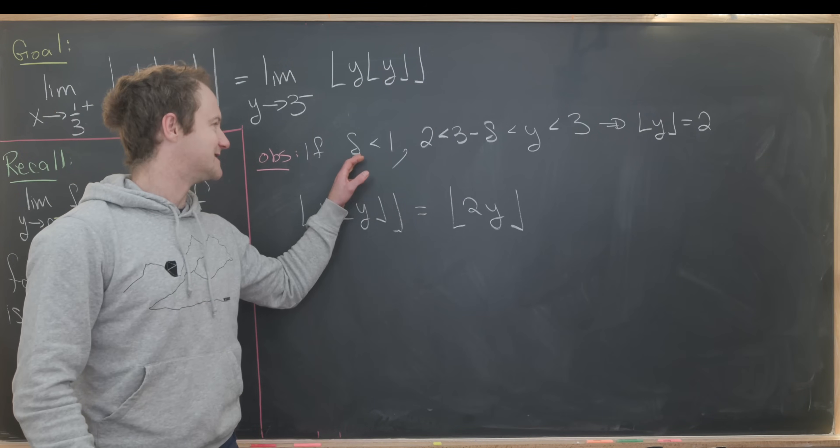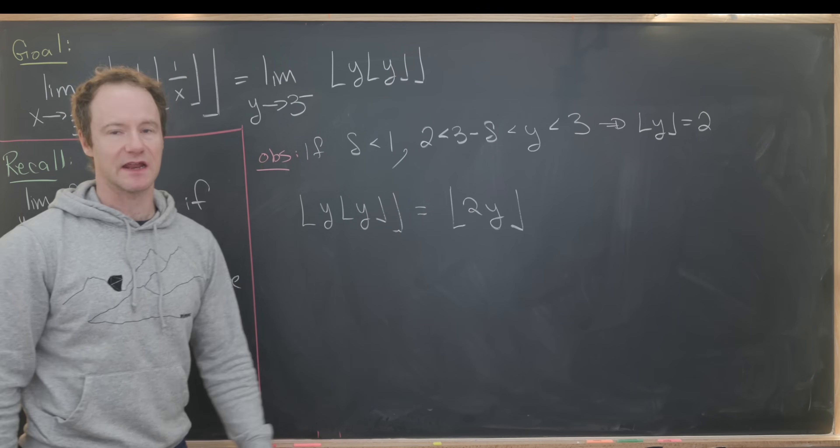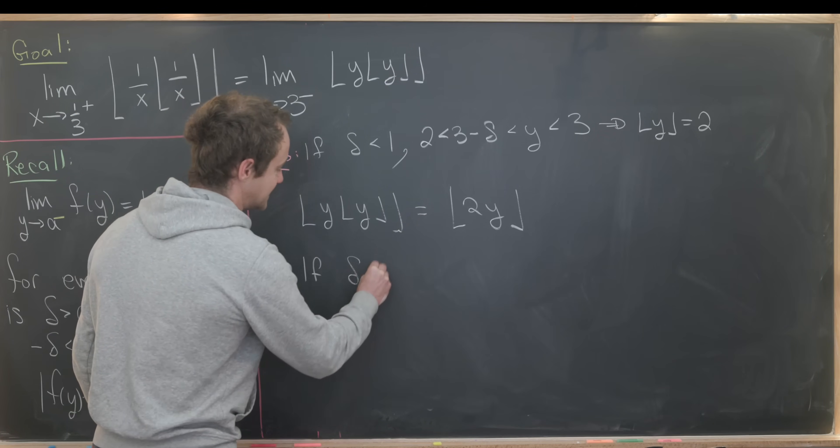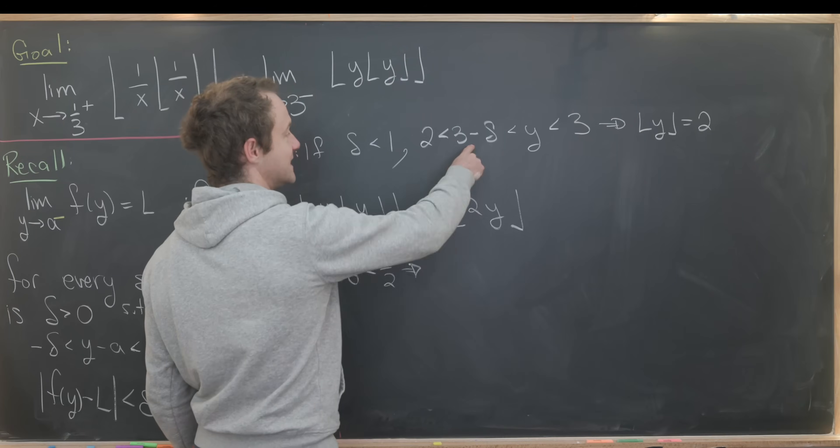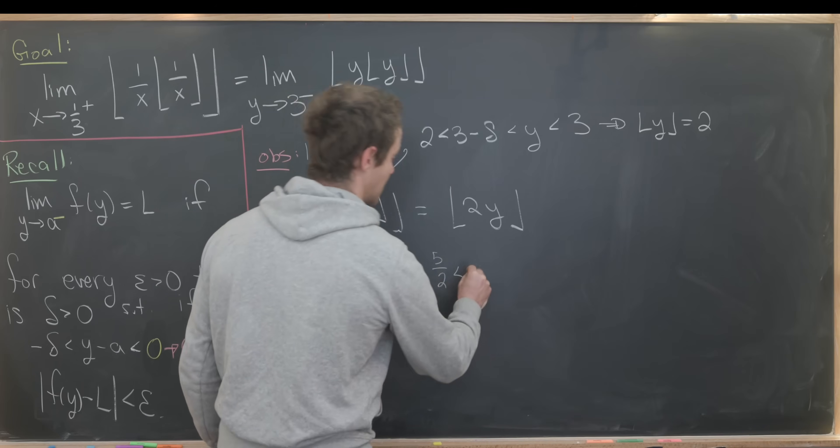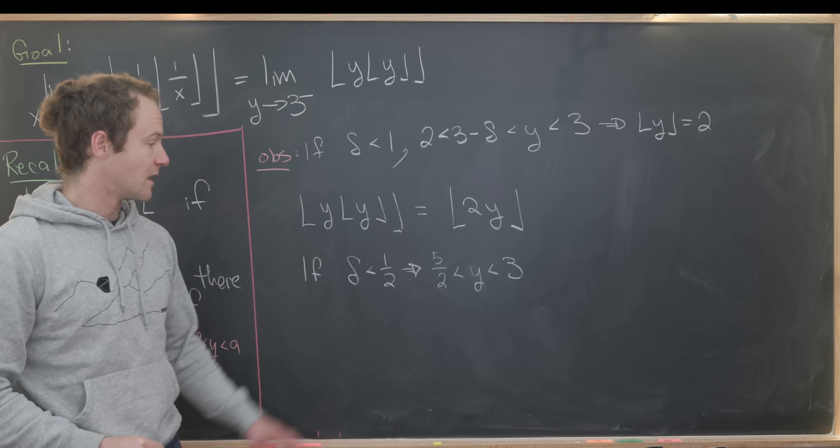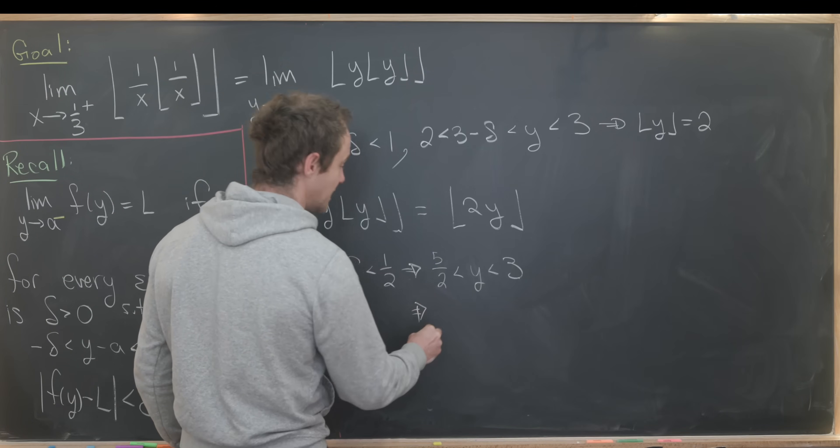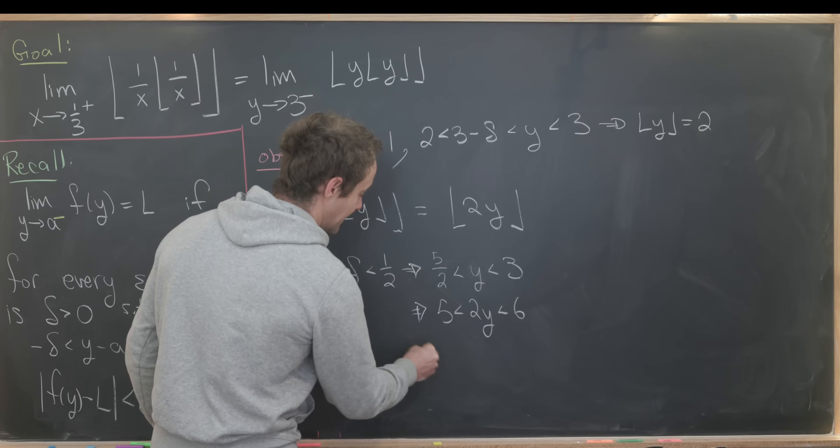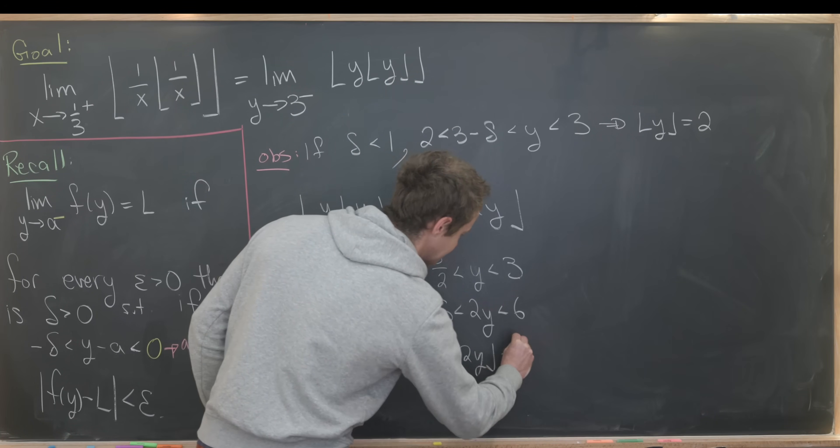But now if delta is less than 1, but maybe bigger than 1 half, it might be hard to get a handle on what's going on here. Let's notice that if further delta is less than 1 half, then this inequality turns into 5 halves is less than y, which is strictly less than 3. We can multiply all parts by 2, and we'll see that 5 is less than 2y, which is less than 6. Then we can take the floor of that. So the floor of 2y is equal to 5.